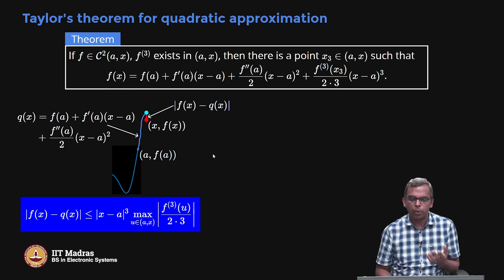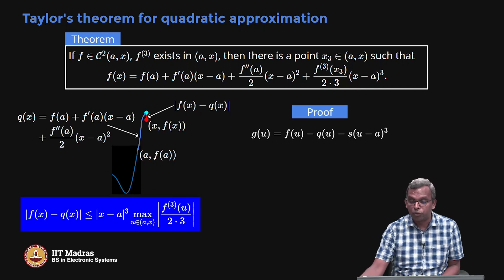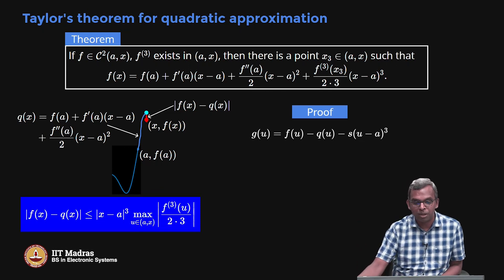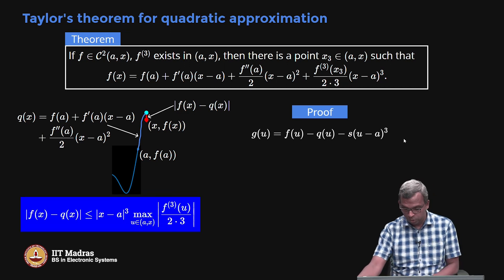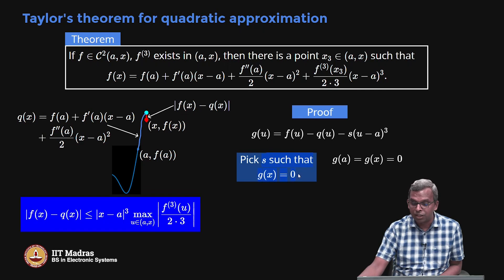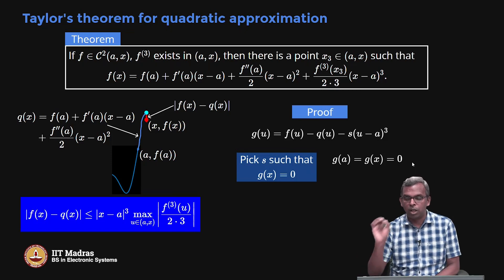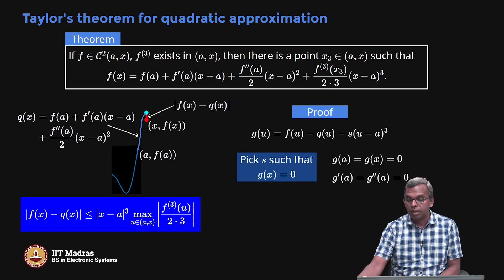The proof is very similar to what we did before. I am going to write G of u which is F of u minus Q of u minus S times (u minus A) to the power 3. Notice the form: this is Q of u, this is F of u, and I know the form is going to be (u minus A) to the power 3 — I do not know what comes in front, so I take it as S. To use Rolle's theorem, I pick S such that G of x is 0, giving G of A equals G of x equals 0. You can check that G prime of A equals G double prime of A equals 0.